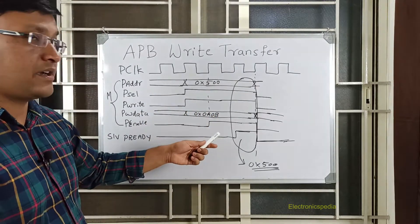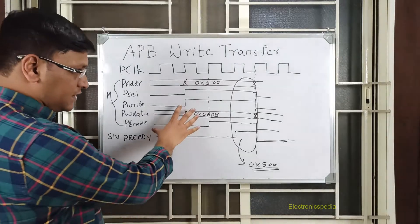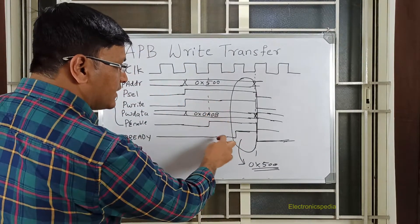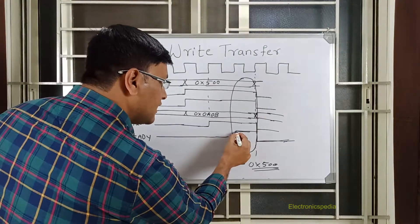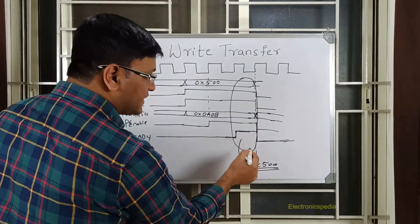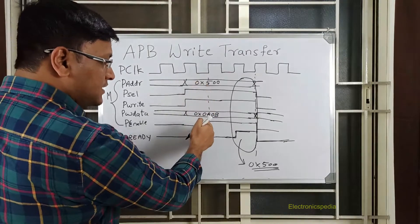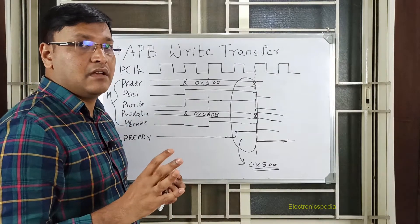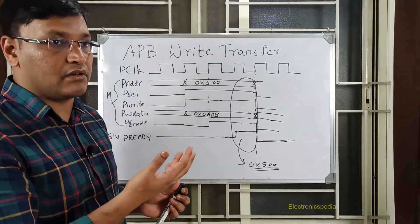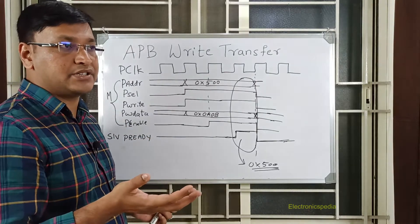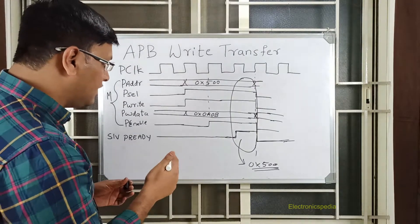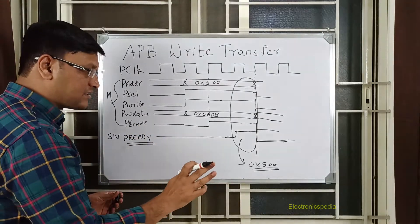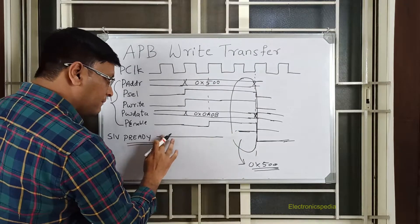Now, there are two concepts: write transfer with wait states and write transfer with no wait states. In this case it's a no-wait-state transfer, because as soon as PENABLE is asserted, in the next clock cycle PREADY is coming. This means if you have a slave which is always ready to take data — whether for a write or read operation — it can choose to assert PREADY always.